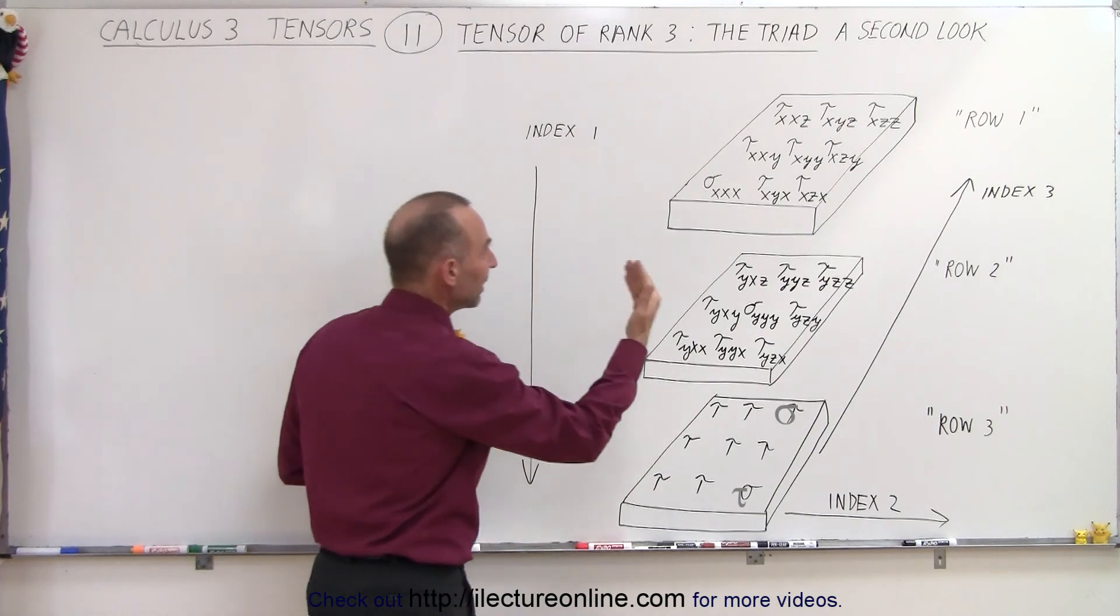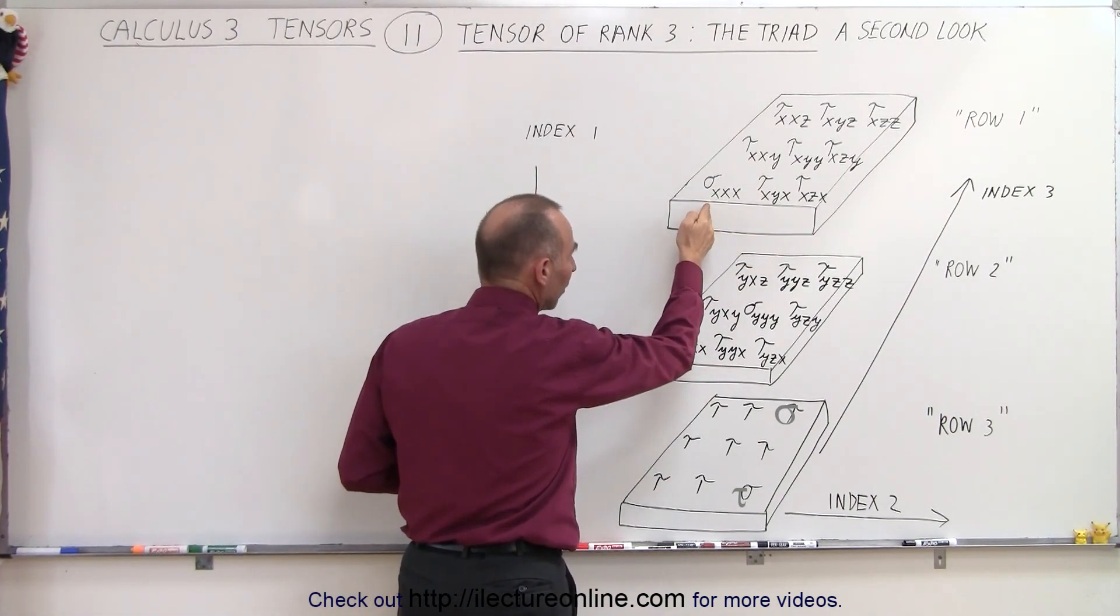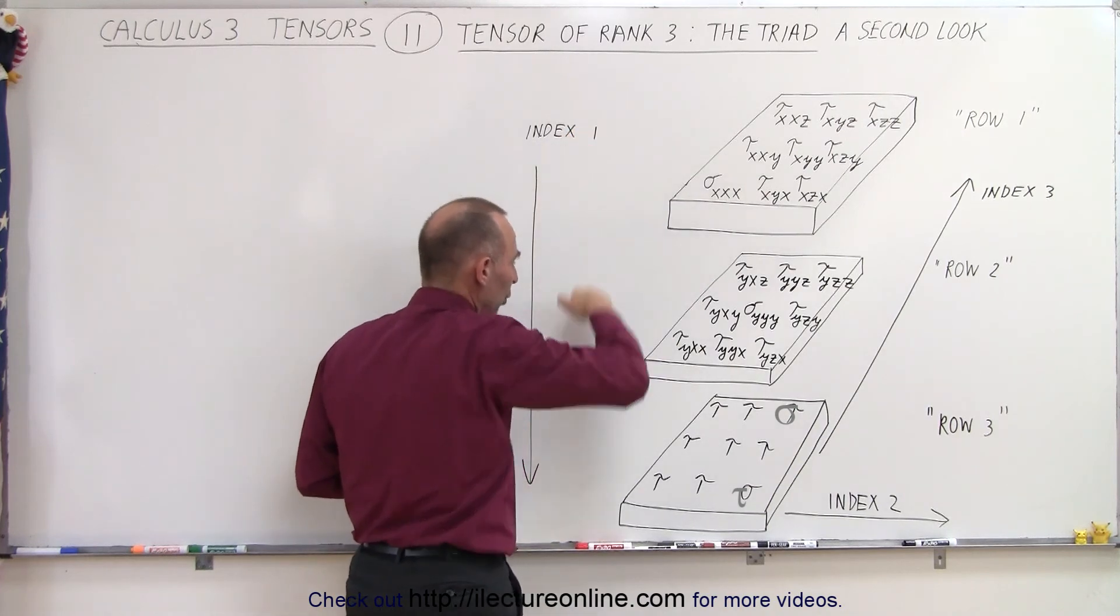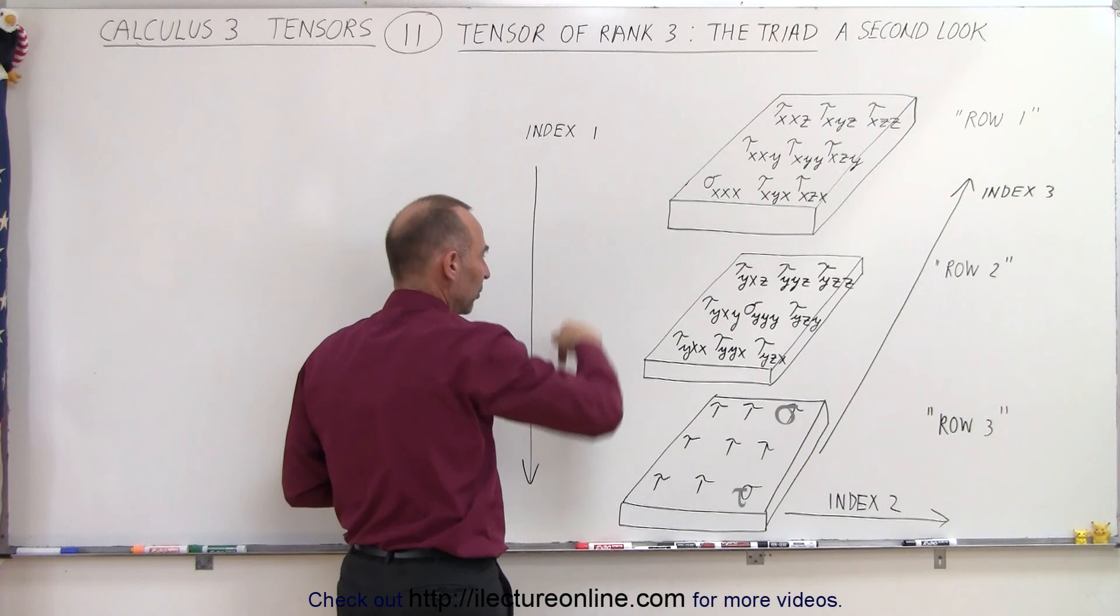Remember that there are three indices: the first, the second, and the third. The first one represents what we would call the row, and so we have the first row, the second row, and the third row, so we go from top to bottom.